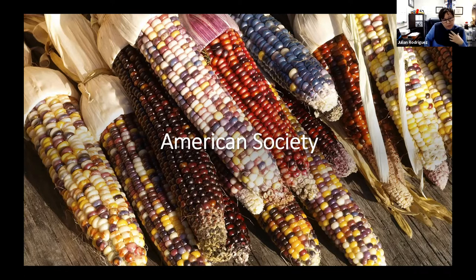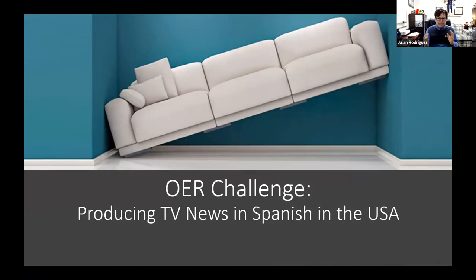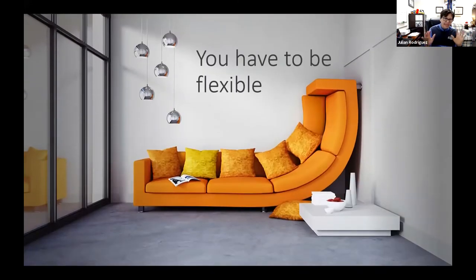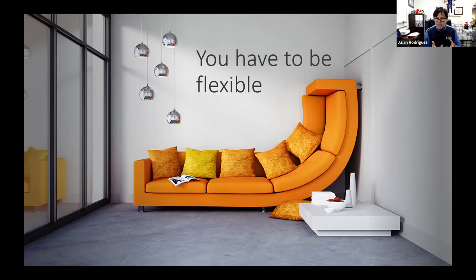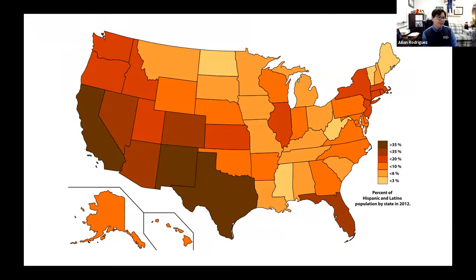When I started writing this OER in Spanish about Spanish language television news production in the United States, one thing I had to learn is that I need to be flexible, because it doesn't necessarily fit neatly. If you really want to make it fit, you have to think outside the box and include as many things as possible while remaining flexible with culture, yet still identify something unifying here in the United States.